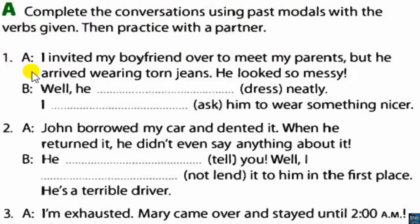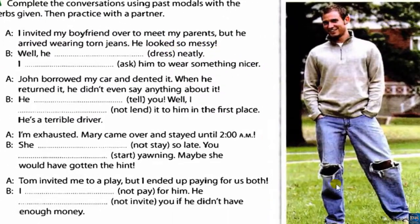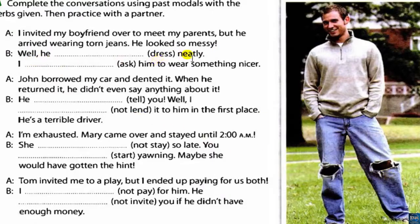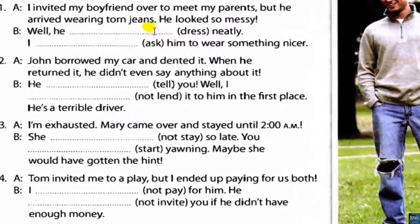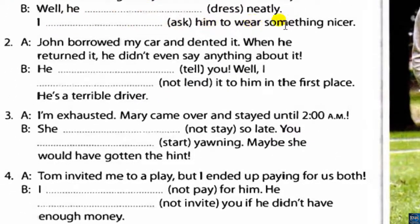Number one: 'I invited my boyfriend over to meet my parents, but he arrived wearing torn jeans. He looked so messy.' So the boyfriend was wearing torn jeans and looked messy, not neat. The answer for B: 'He could have dressed neatly.' And: 'I would have asked him to wear something nicer.'